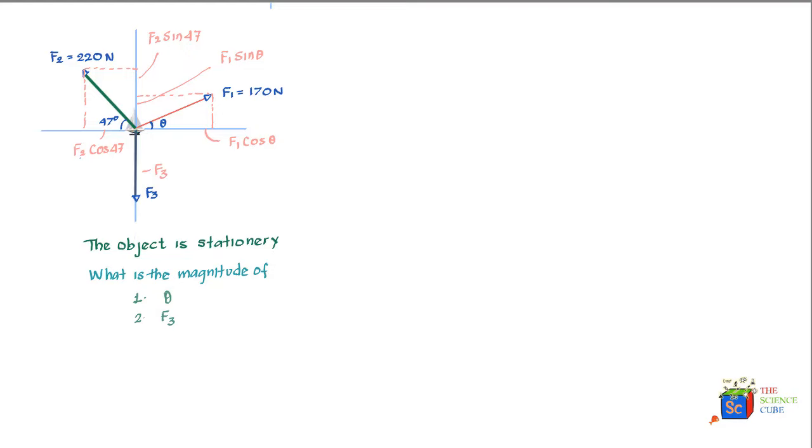Once you have split each force into its respective components, what you need to realize is that since the boat is stationary, the net force acting on it in x direction should be zero. Because if there was some force acting in any of the x directions, either towards the left or towards the right, the boat would have started moving. The fact it is not moving means all the forces put together, the net force is zero. Likewise, the boat is not moving up or down, which tells us that the sum of the vertical components should also be zero.